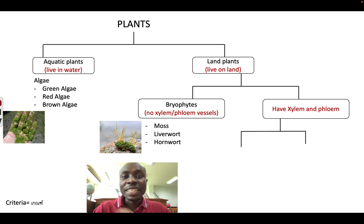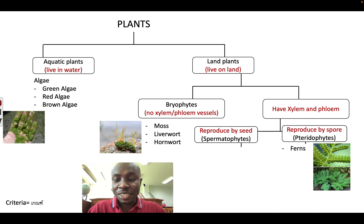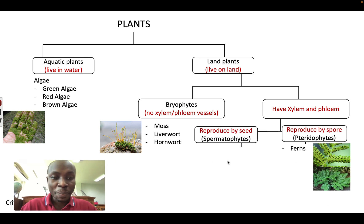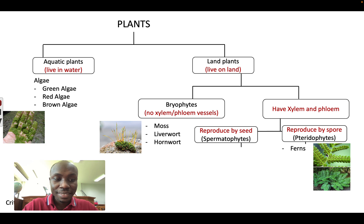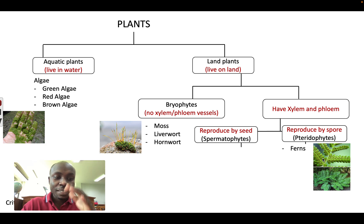Those which have xylem and phloem are also divided into two. Some of them reproduce by seed — we call them spermatophytes. And some of them reproduce by spore — we call them pteridophytes, or ferns. You can see in this picture, under the leaf of the fern are dark spots. These are the spores.